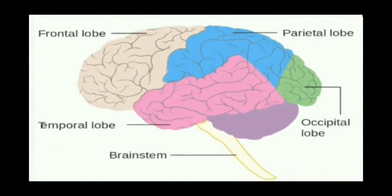There are four lobes. The first lobe is the Frontal lobe. Second is the Temporal lobe. Third is the Parietal lobe. Fourth is the Occipital lobe. These are the four lobes.